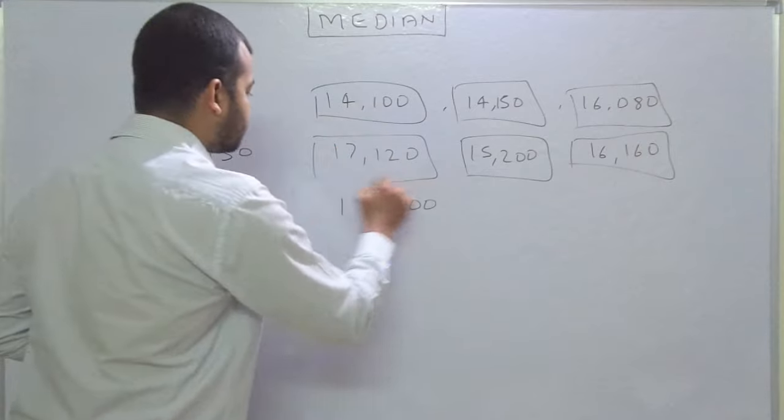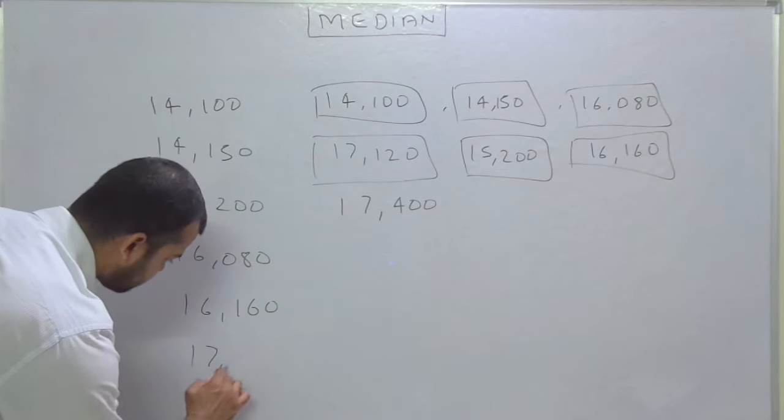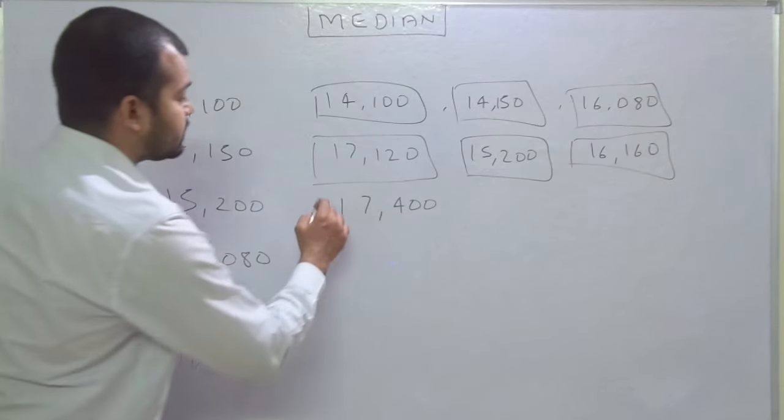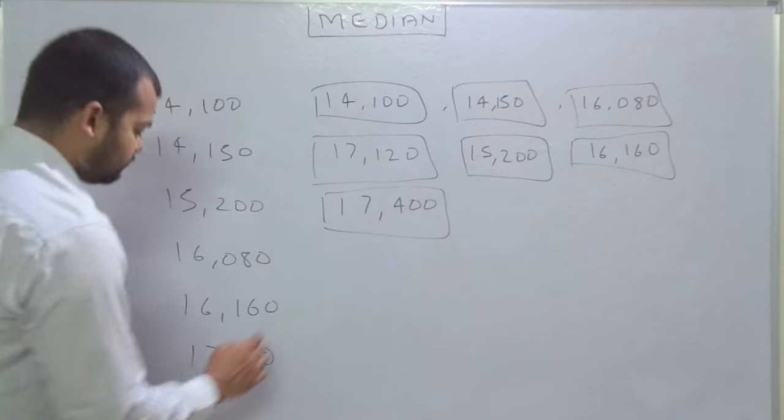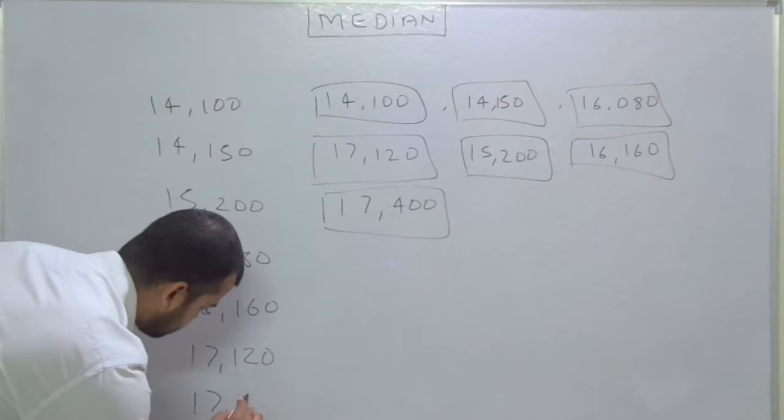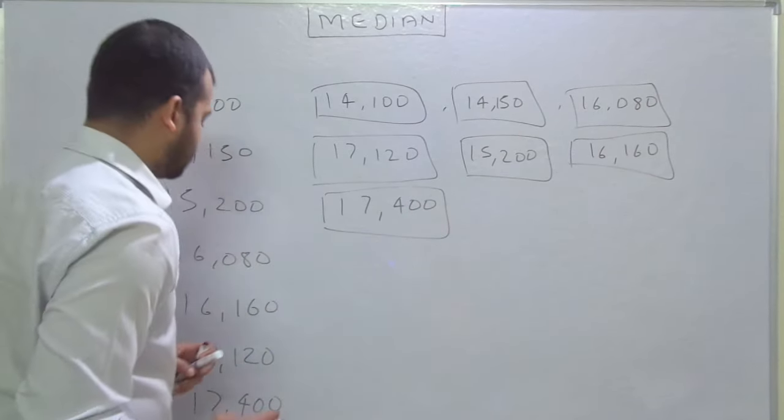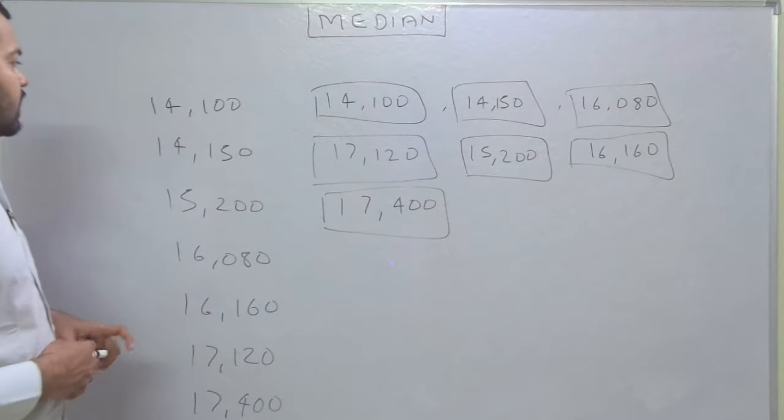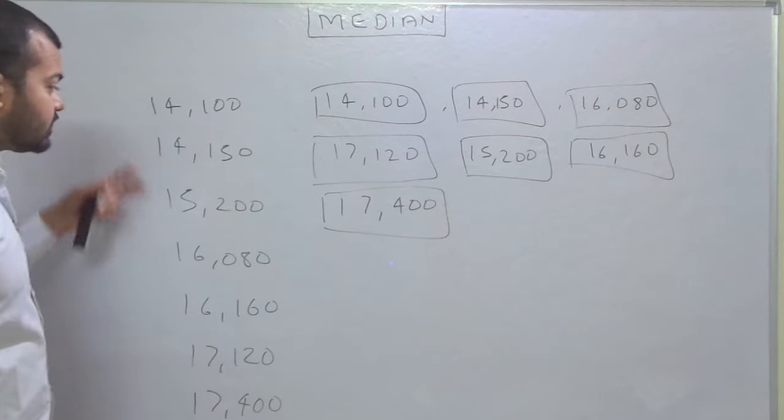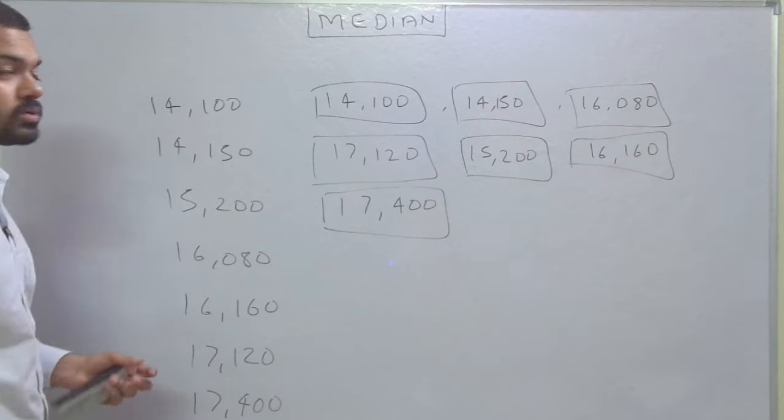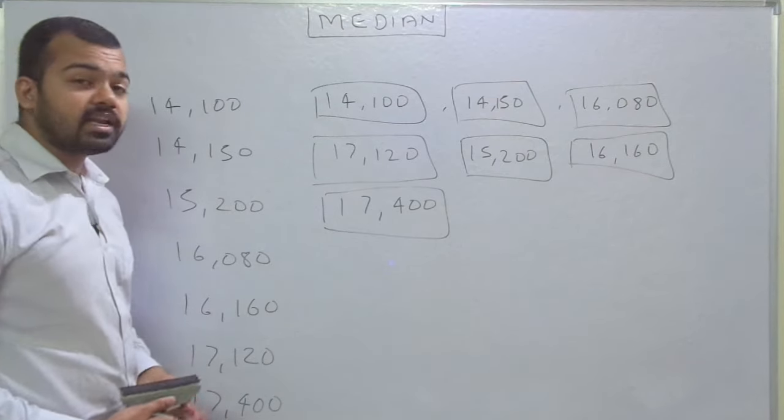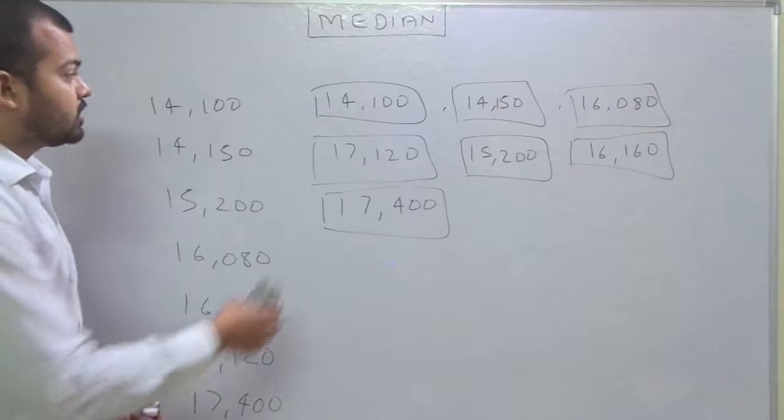The sixth is 17,120, and the last one is 17,400. So these are the numbers arranged in ascending order. This is the first step to calculate median when we are dealing with an individual series. Now we can rub these values, or you can encircle or make a square so you cannot repeat all these words.